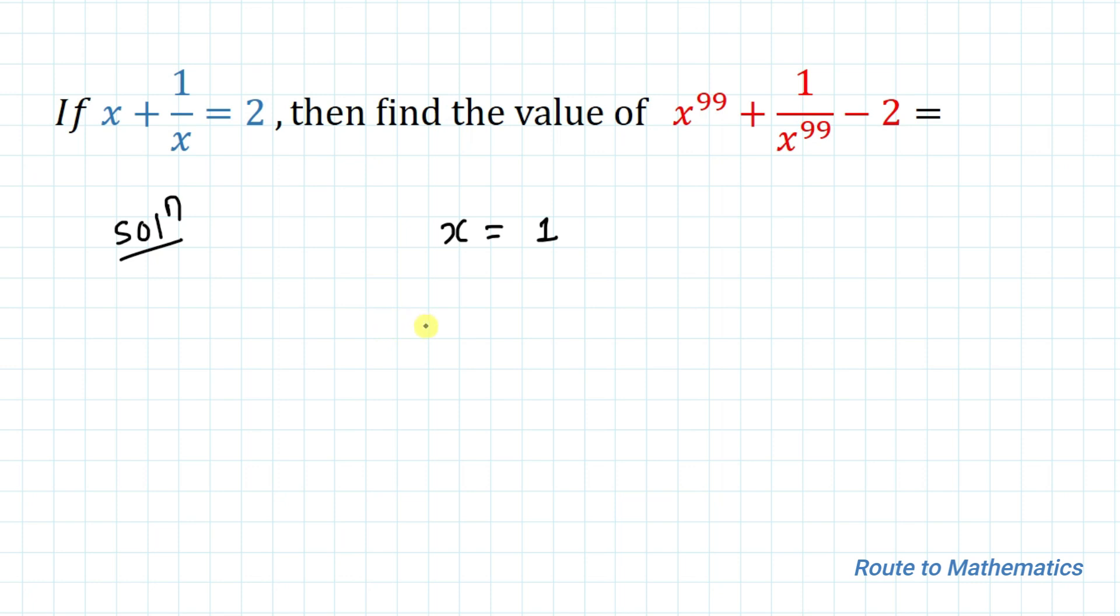This becomes 1 to the power 99 plus 1 by 1 to the power 99 minus 2. Since 1 to the power of anything is 1, we get 1 plus 1 minus 2, which equals 0. This is the answer.